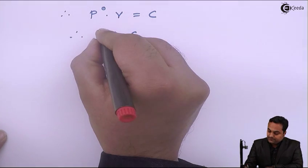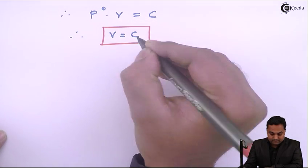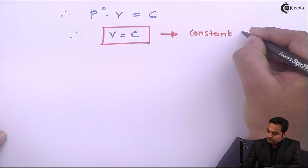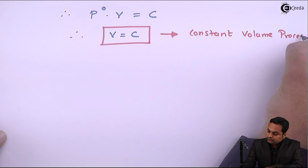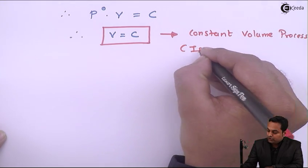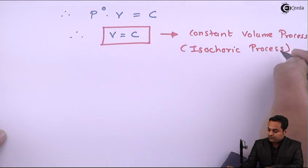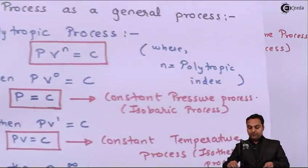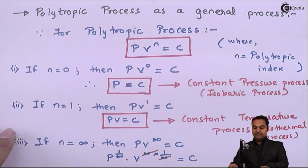If the volume is constant, this indicates a constant volume process, also called the isochoric process. So we are seeing in this video that the polytropic process is a general process — just by changing the polytropic index we are getting different processes.